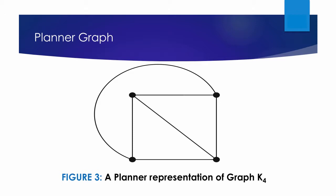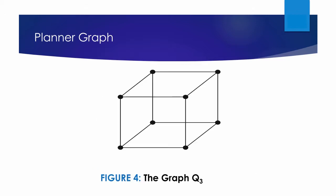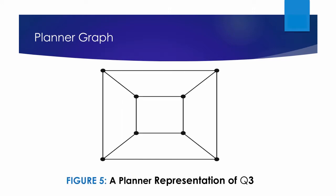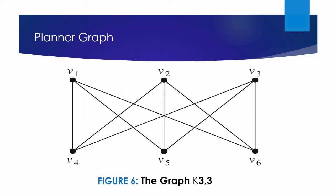Taking a second example: is K3, shown in Figure 4, a planar graph? K3 is planar because it can be drawn without any edges crossing, as shown in Figure 5. Is K3,3, shown in Figure 6, a planar graph?